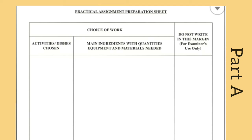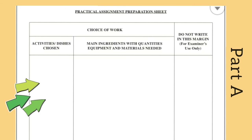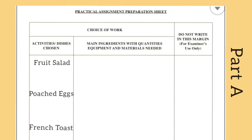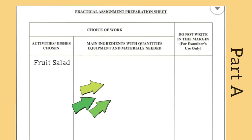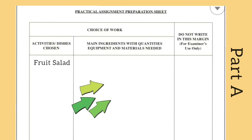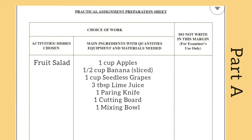Now we're moving on to Part A of the time plan — this is the choice of work section. As you can see, it has three columns. The first column, 'Activity or Dishes Chosen,' is where you include the names of all the dishes you are going to prepare — for example: fruit salad, poached eggs, and French toast. The second column covers main ingredients with quantities, equipment, and materials needed. This is where you write all the ingredients along with the tools and equipment, though some teachers advise not including tools here since they will be rewritten in Part C.